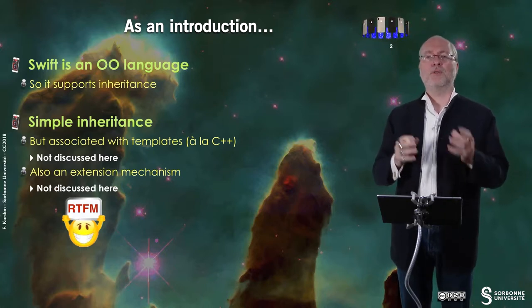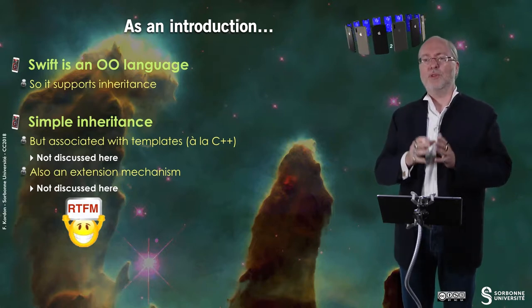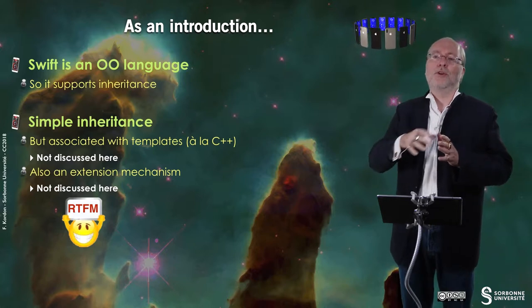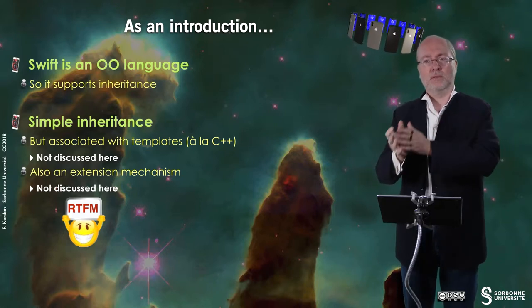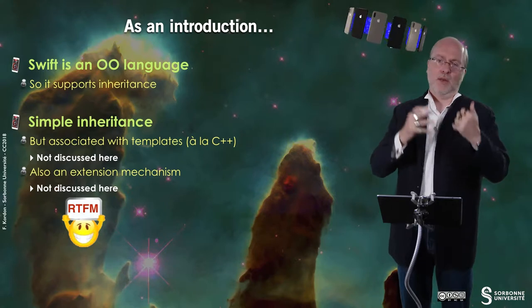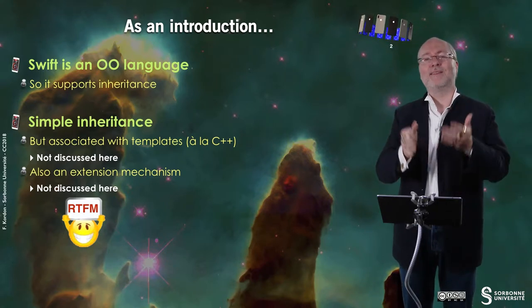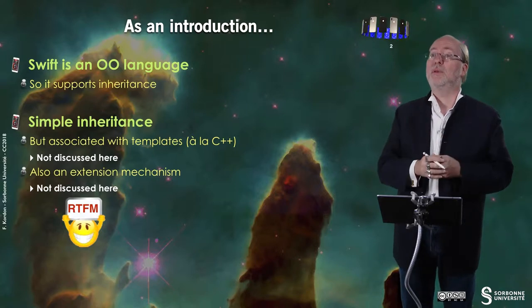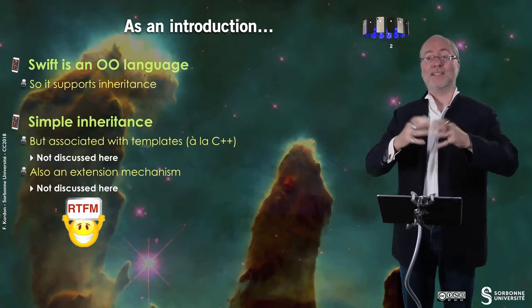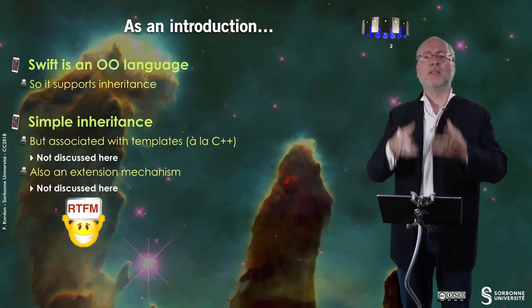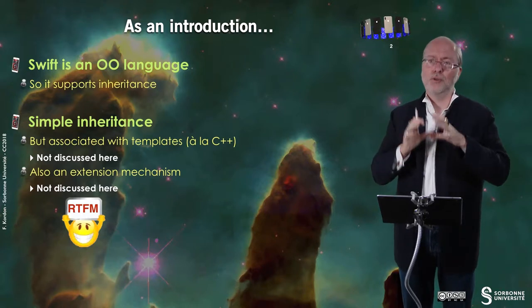But basically the difference between inheritance and extension is that when you extend a class, you extend the class by adding some elements. When you inherit a class from another, you can either make some extension, but you can also rewrite existing methods and change their behavior. So that's similar but not exactly the same thing. Basically, the extension mechanism is really interesting when you want to extend an existing class, for example from a framework. You can declare your own UI view and you extend it with some mechanisms that are useful to you.